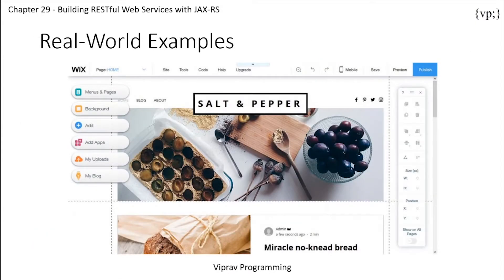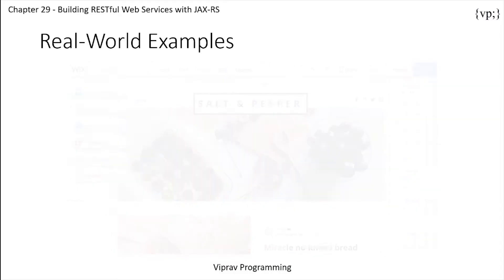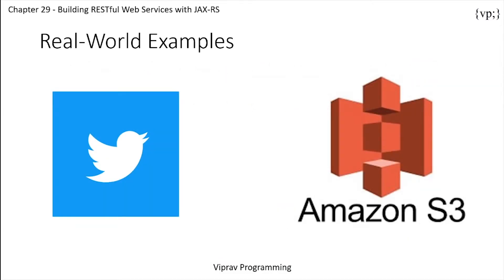Now, real-world examples. Most blog sites actually use RESTful web services. These sites contain downloading XML files that contain links of lists of other resources and other websites and web applications that use the REST-like developer interface to manage data. It includes Twitter, Amazon S3 — which is a Simple Storage Service — where buckets and objects can be created, listed, and retrieved using either a REST-style HTTP interface or a SOAP interface.